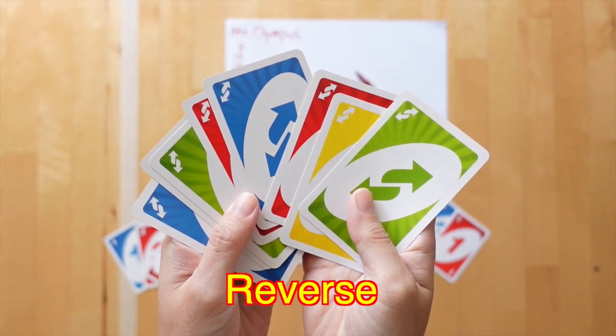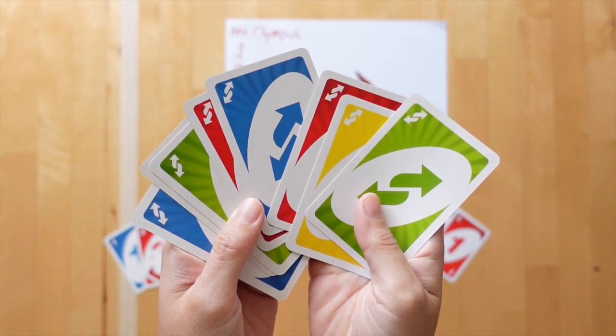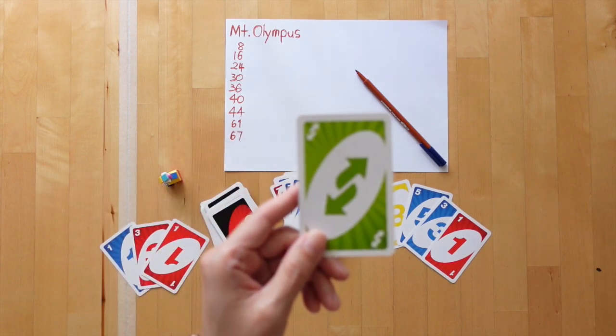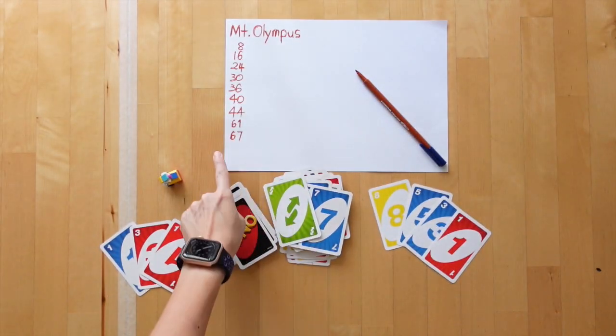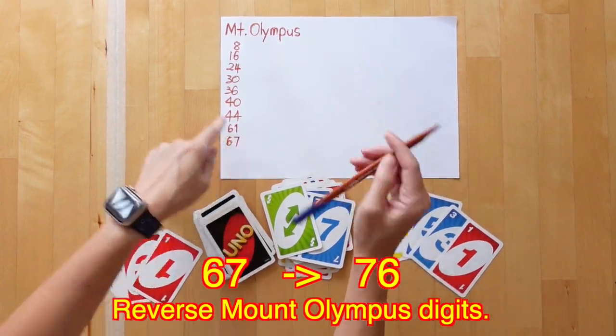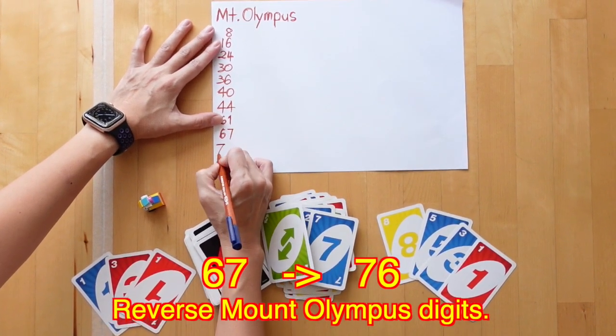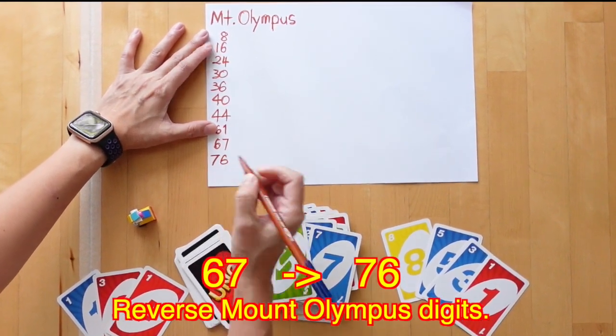The reverse card will play the same action as the Hermes card in the original Zeus on the Loose game, which is to reverse the mountain's digits. So 67 will become 76.